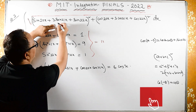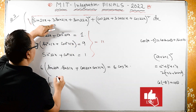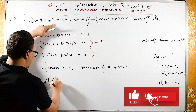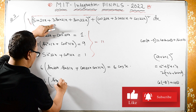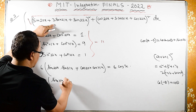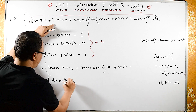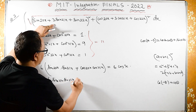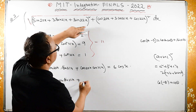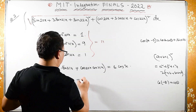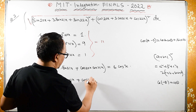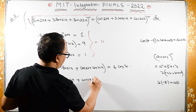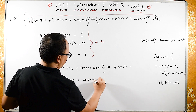And for the other cross term we have 6 times: sin(21x)sin(22x) plus cos(21x)cos(22x), which again by the cosine difference identity equals 6 cos(22x - 21x) = 6 cos(x).